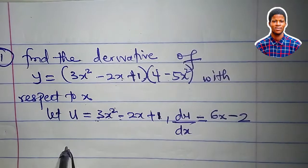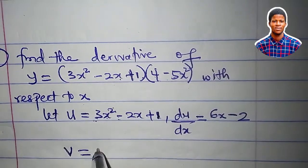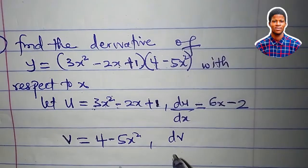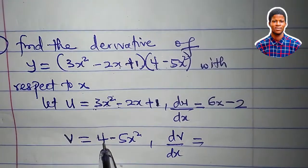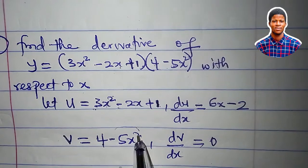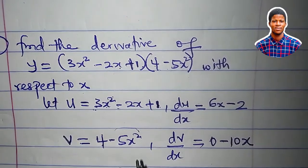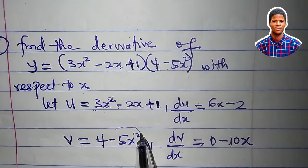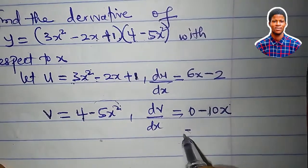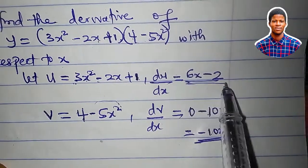So v will now be equal to 4 minus 5x². So what's dv/dx? Differentiate 4 to get 0, 4 is a constant. Differentiate minus 5x² to get minus 10x. 2 times minus 5 is minus 10, 2 minus 1 is 1. So what's this now equal to? We have minus 10x. So this is dv/dx and this is du/dx.